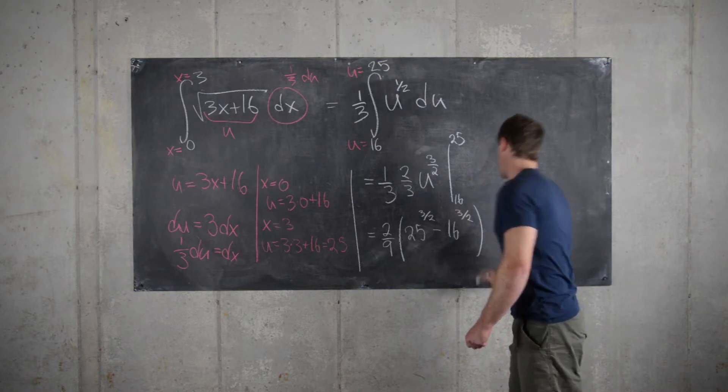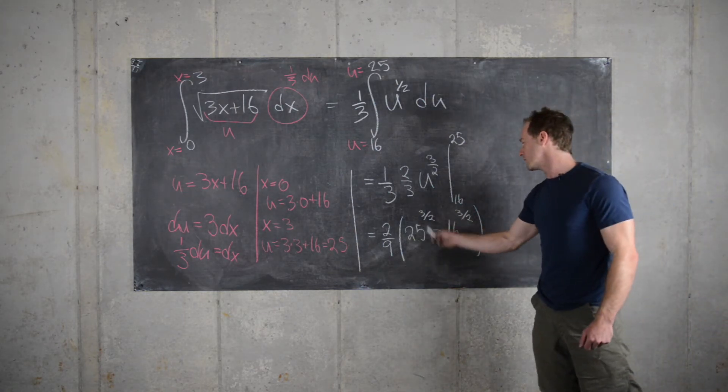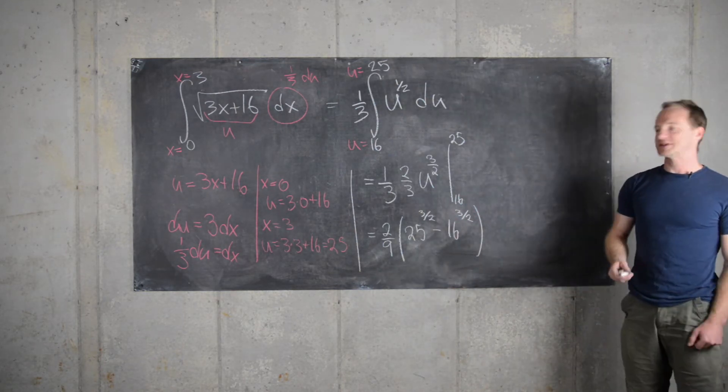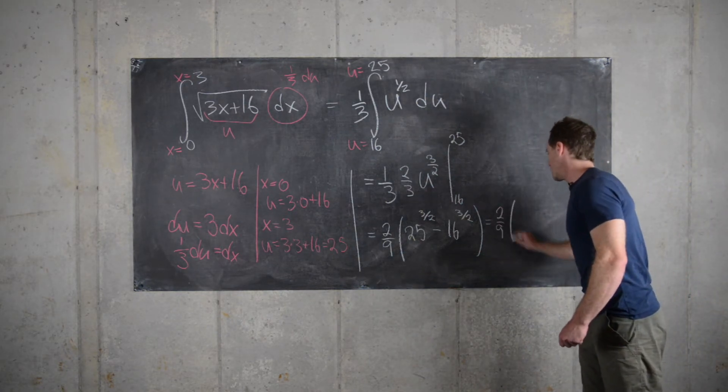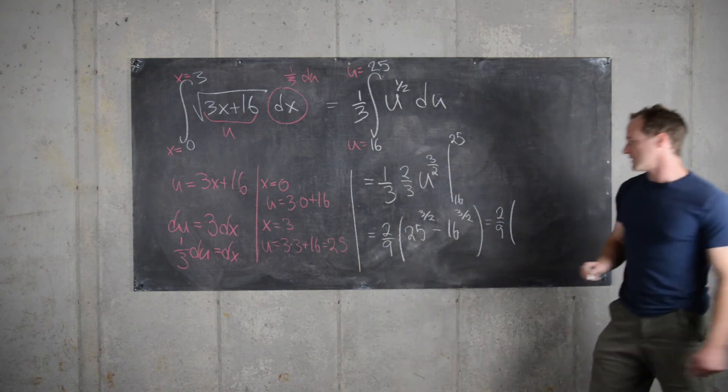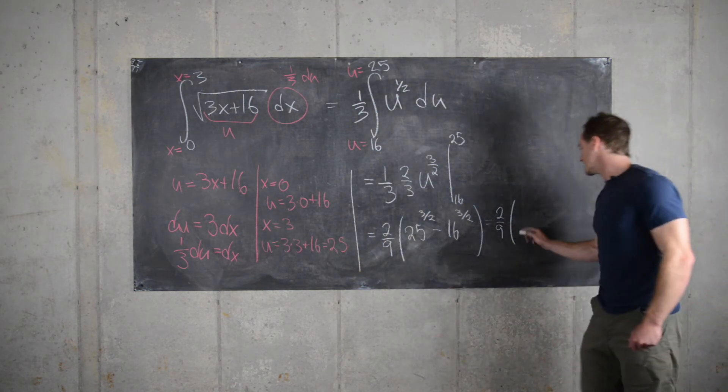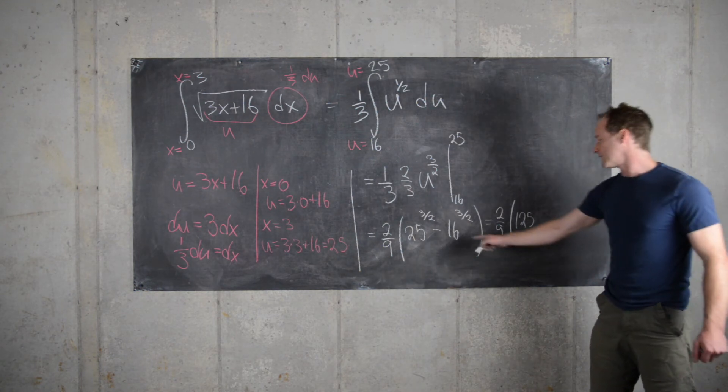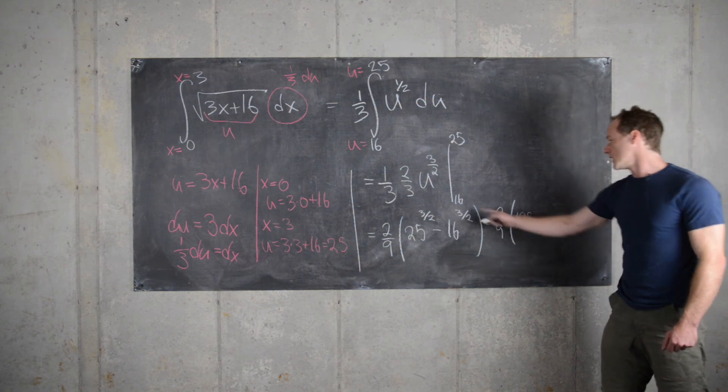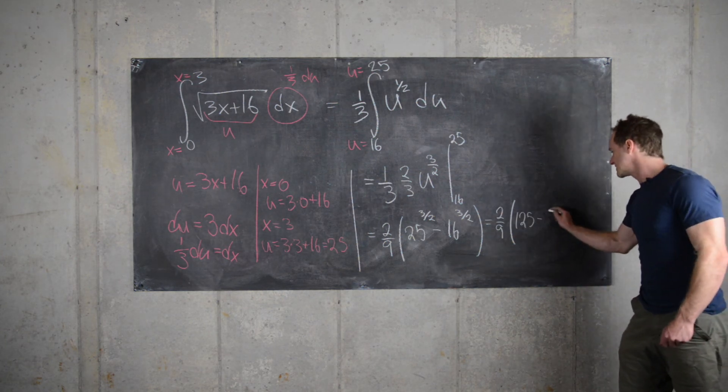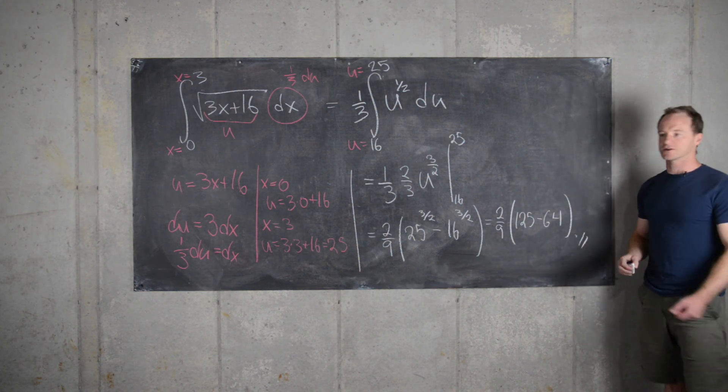There's a quick way to do that. We can take the square root first and then cube second. That gives us 2 over 9 times: the square root of 25 is 5, cubed is 125, and then the square root of 16 is 4, 4 cubed is 64. So we have this for our final answer.